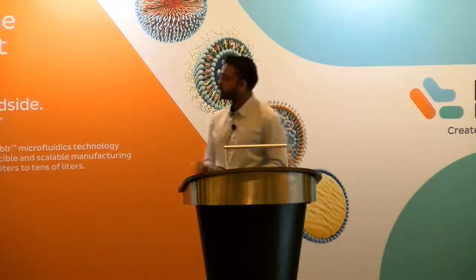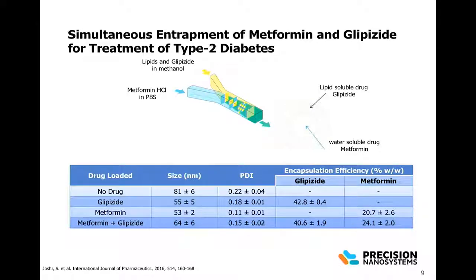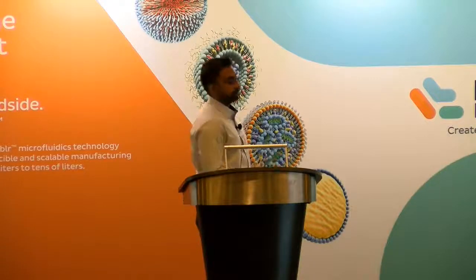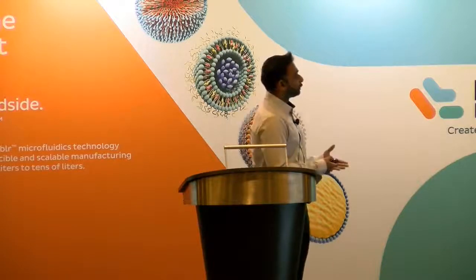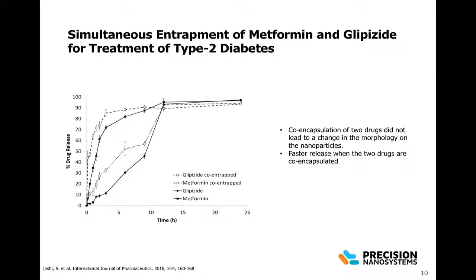One interesting finding was that post-encapsulation, the size of the nanoparticles actually decreased from 80 nanometers to about 65 nanometers. Co-encapsulation of the two drugs did not change the encapsulation efficiency — they maintained 40% encapsulation of glipizide and 20% encapsulation of metformin. That 20% is generally higher than what is seen in the literature for passive loading. They also did not see a change in nanoparticle morphology, but the release profile did change — when the drugs were co-encapsulated, there was a much faster release compared to single drugs.